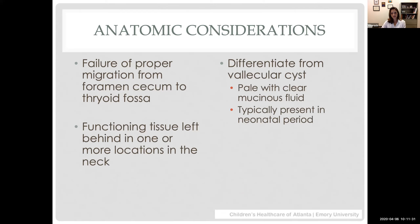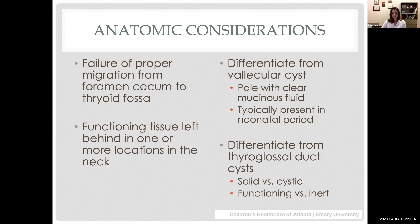One thing to differentiate lingual thyroid from is a mucocele cyst, which will usually be pale pinkish or almost bluish in coloration with a translucent look due to the mucinous fluid inside. These are more commonly diagnosed in the neonatal or infant period and tend to cause profound dysphagia or obstructive symptoms. A thyroglossal duct cyst in that location can be challenging to differentiate from a mucocele, but you would differentiate it from lingual thyroid because it is cystic and does not have active thyroid tissue in it.